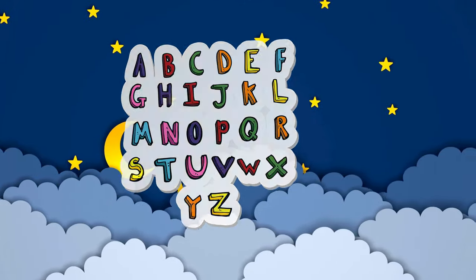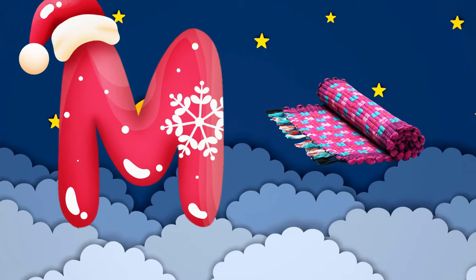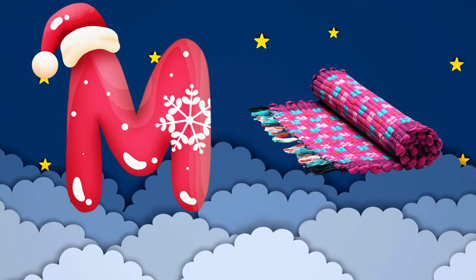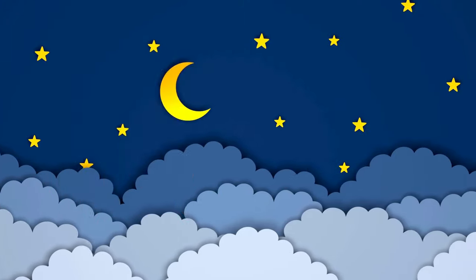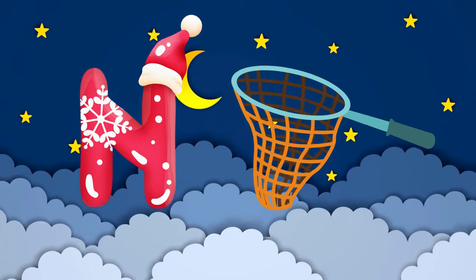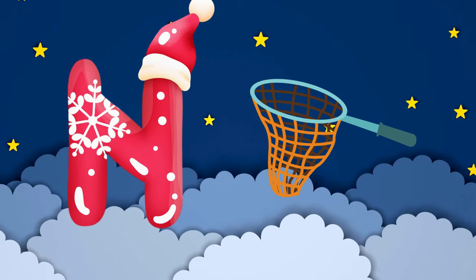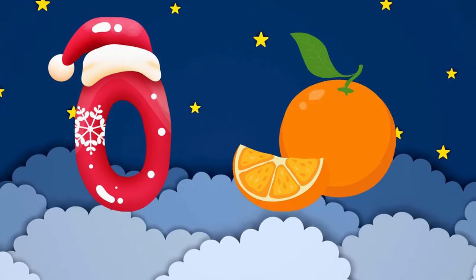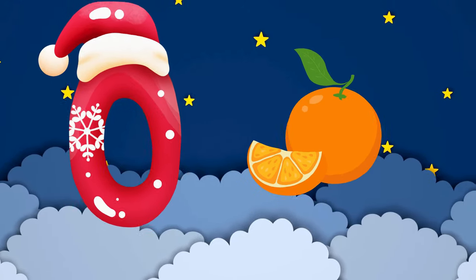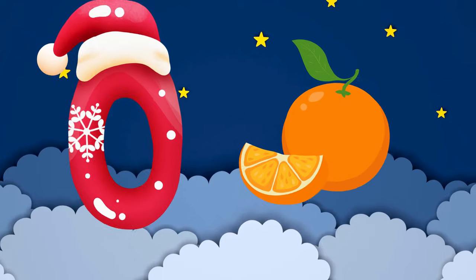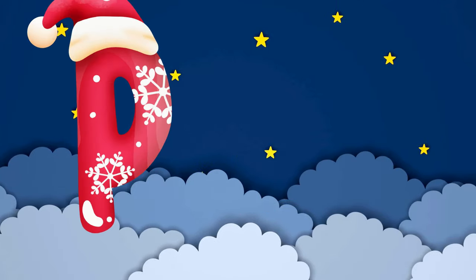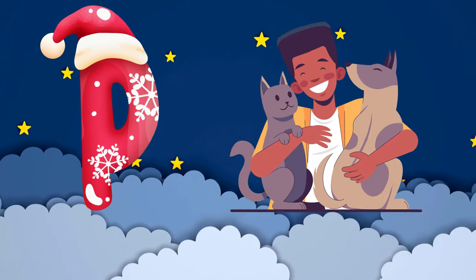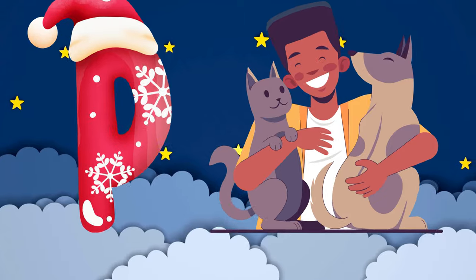M is for mat, m-m-mat. N is for net, n-n-net. O is for orange, o-o-orange. P is for pet, p-p-pet.